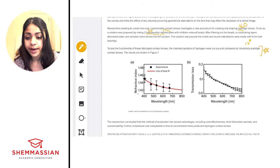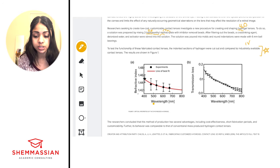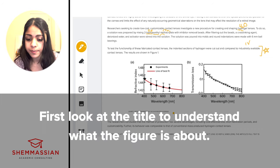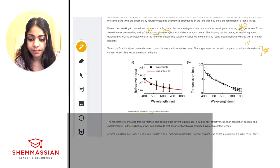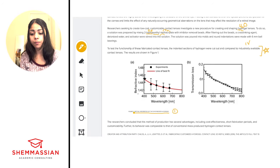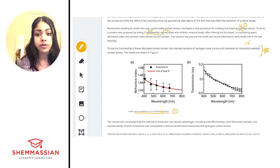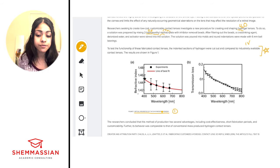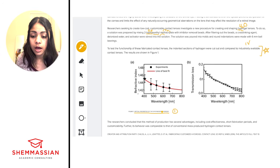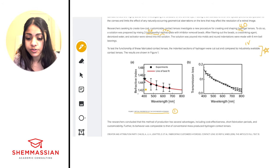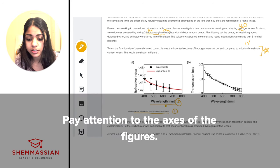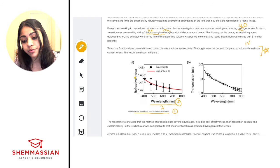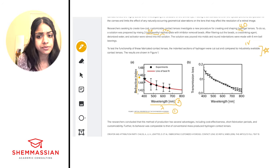When looking at a figure, the first thing you want to look at is the title — just to understand what the figure is about. The title here is 'Optical Properties of the Synthesized Hydrogel,' so even though the experiment compares industrially available and hydrogel lenses, this figure specifically focuses on the synthesized hydrogel. There are two graphs here; the first one has wavelength in nanometers on the x-axis and refractive index on the y-axis.